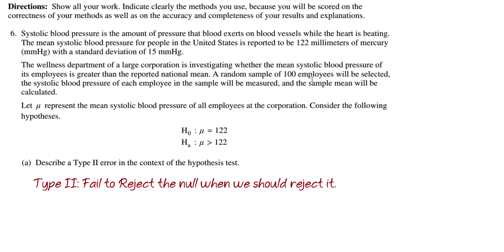Remember, a Type 2 error is failing to reject the null when we should reject it. In this specific example, the company is trying to see if their employees have a higher blood pressure. Failing to reject the null means we are not concluding that it's higher. We are concluding that it's the same as everyone else.